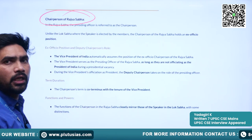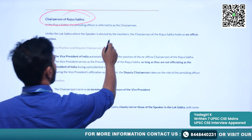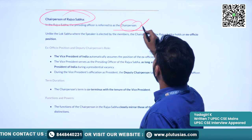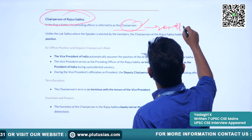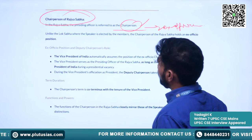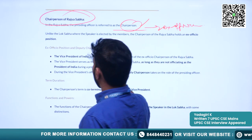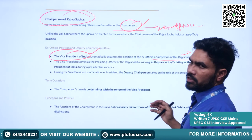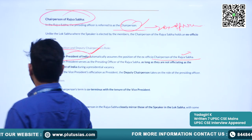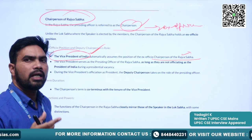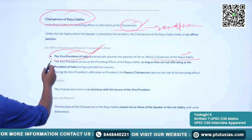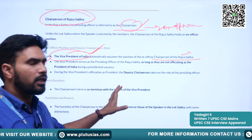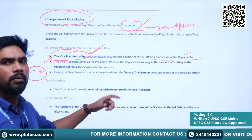Now we will understand some aspects about the chairperson of the Rajya Sabha. For Rajya Sabha, the presiding officer is the chairperson — this is an ex-officio position. The Vice President of India automatically assumes the position of chairperson of Rajya Sabha. We have taken this practice from the United States of America, where a similar practice exists. So the Vice President acts as the chairman of the Rajya Sabha.